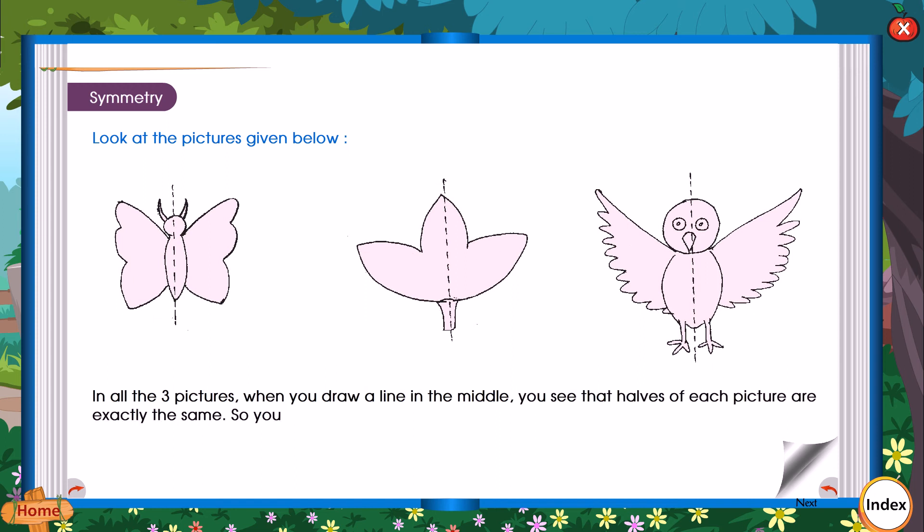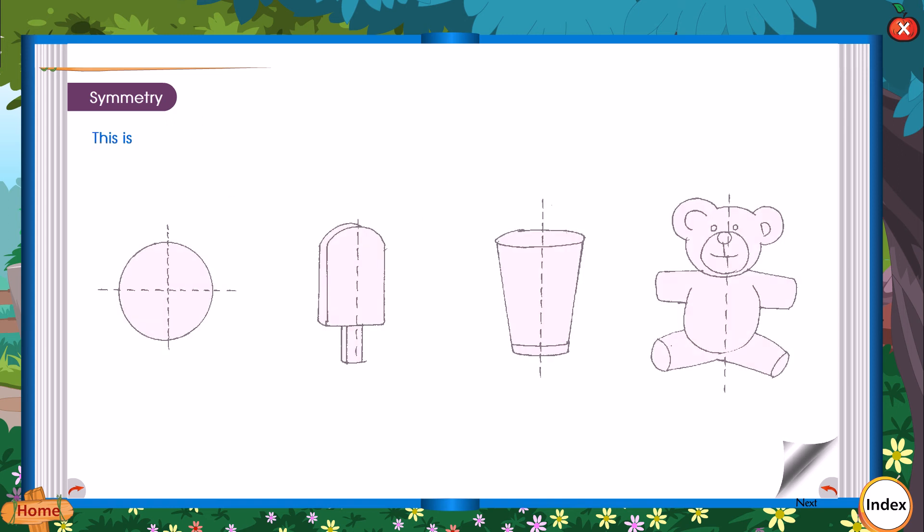So you can say that a butterfly, a leaf and a bird are symmetric. The line drawn in the middle is called the line of symmetry. This is how we draw the line of symmetry.